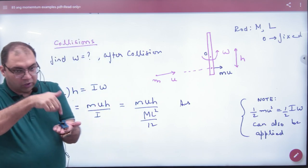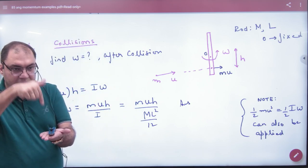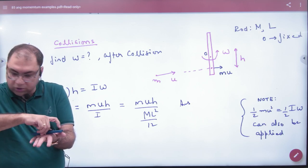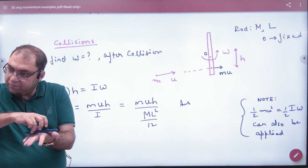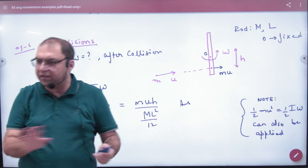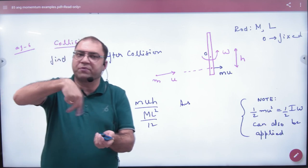So this rod is hinged here. The hinge is placed on the page, stuck at a particular point. It can't do translation motion on the table. It will be pure rotation.